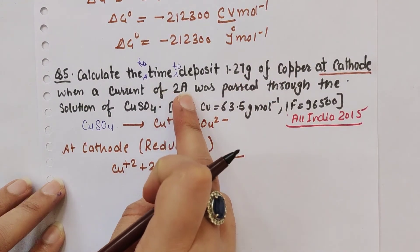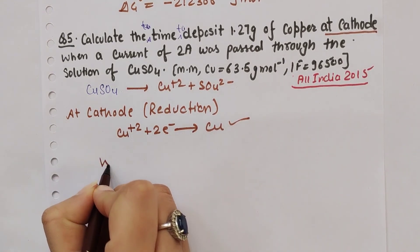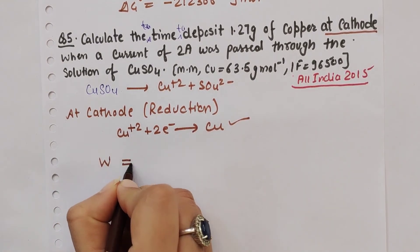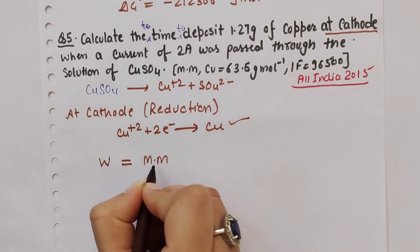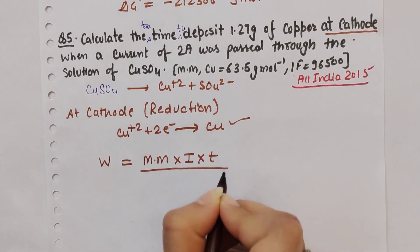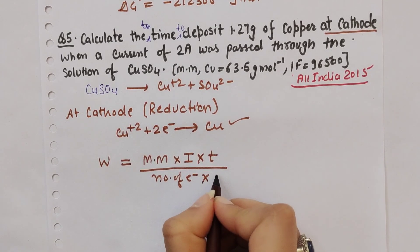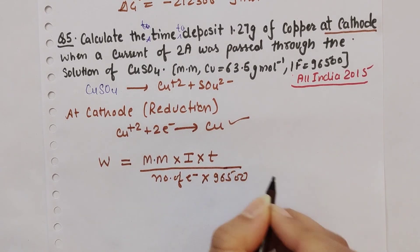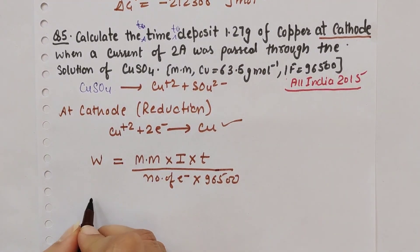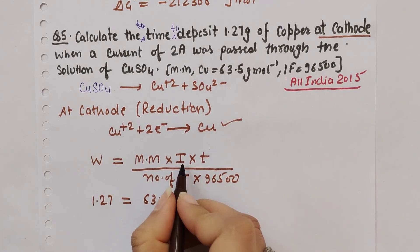The formula for amount deposited at cathode is: w = (M × i × t) / (n × F), where w is the amount deposited, M is molar mass, i is current, t is time, n is number of electrons, and F is Faraday constant (96,500). We have: 1.27 = (63.5 × 2 × t) / (2 × 96,500).